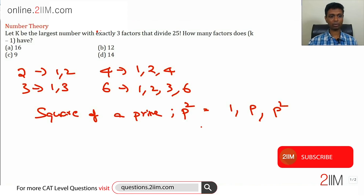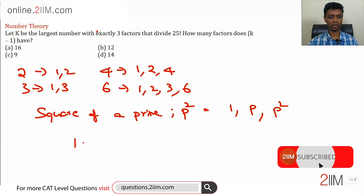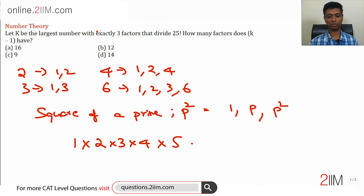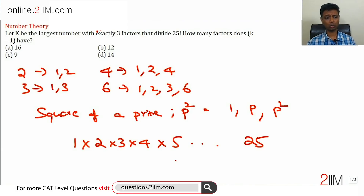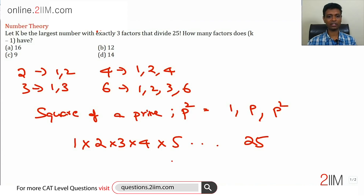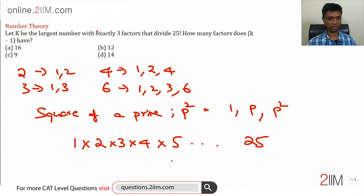Now let's come to the question: k is the largest number with exactly three factors that divides 25 factorial. 25 factorial is 1 × 2 × 3 × 4 × 5 all the way till 25. So k has to be the square of a prime. If you take 2, there's 2, 4, 6, 8 — a very large power of 2 divides 25!. Similarly, a large power of 3 divides 25!, and a large power of 5 divides 25!.